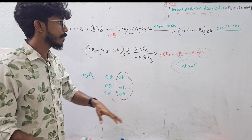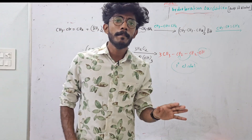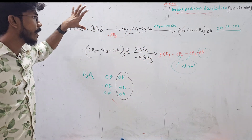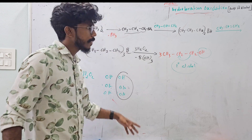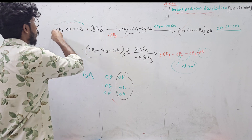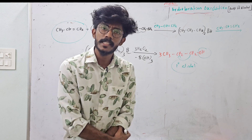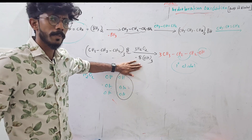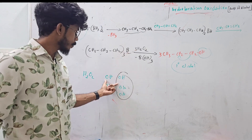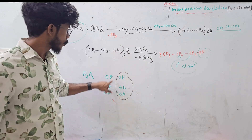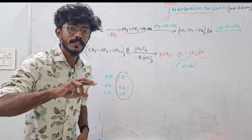This reaction is called the hydroboration oxidation reaction. This reaction produces primary alcohol. In this topic, you will be prepared for this reaction. This is an anti-Markovnikov reaction — if you read this section carefully, it is very important.